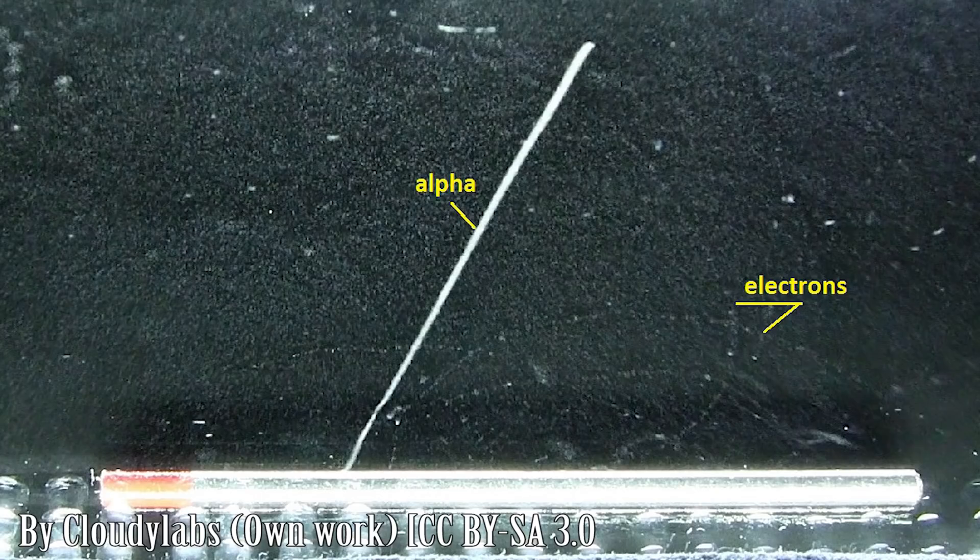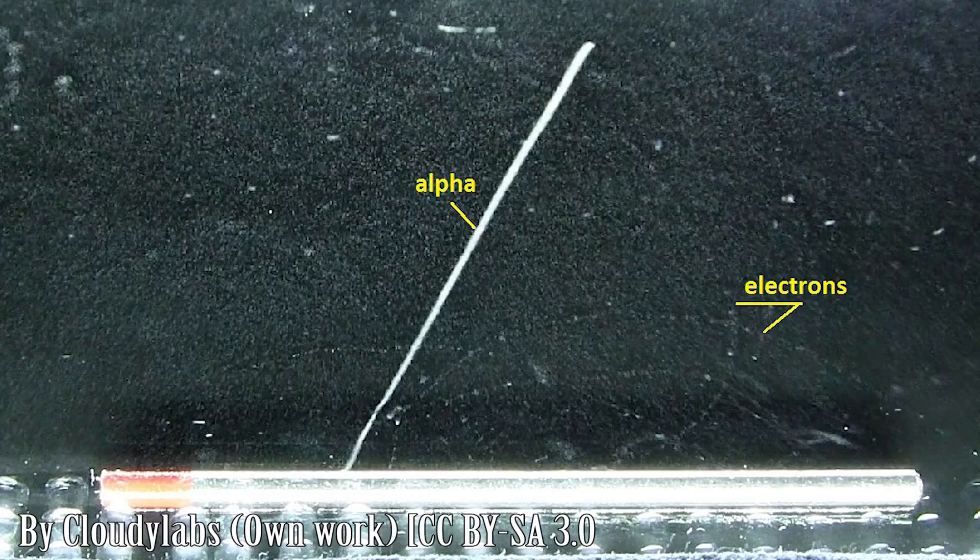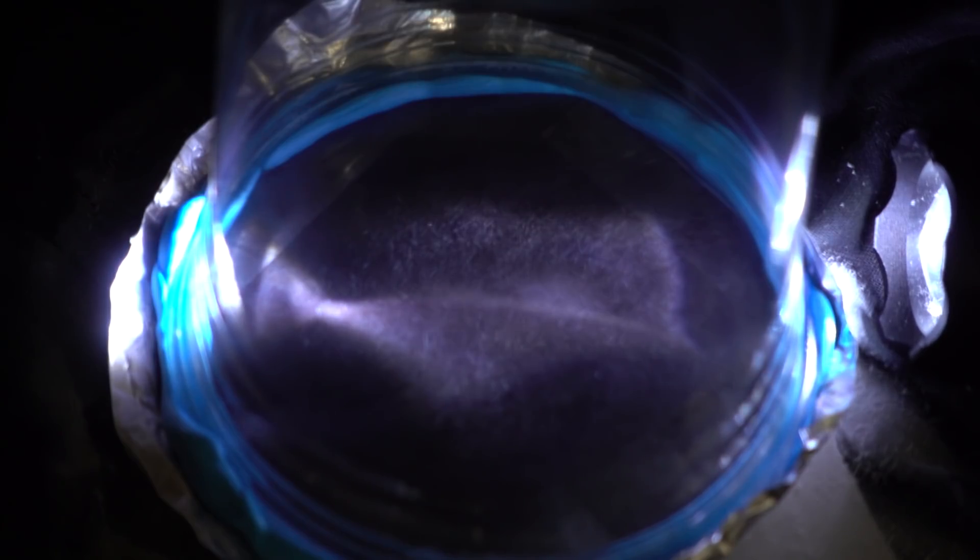And then alpha particles are groups of two protons and two neutrons. You can also tell what type of particle is hitting the gas chamber. For example, alpha particles make a straight thick line and beta particles kind of make a curved wispy line.